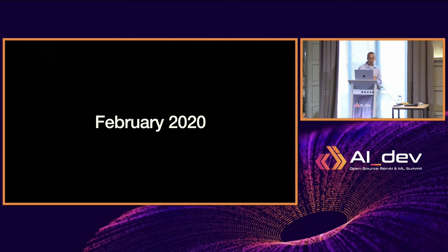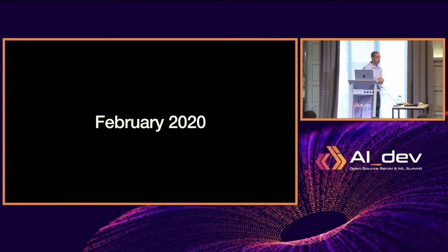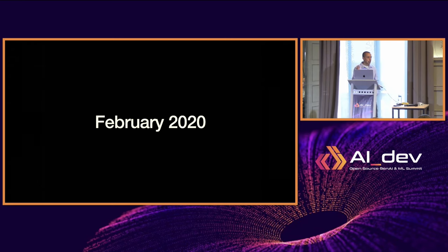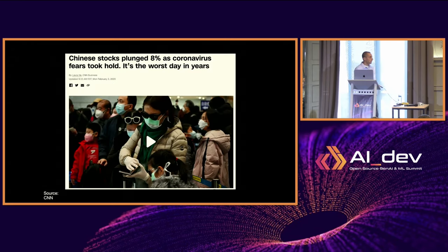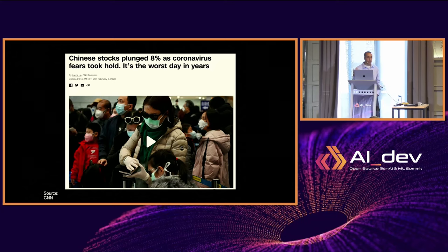I started using GitHub Actions around February 2020 — anyone remember what happened then? COVID. At the time, COVID was mainly in China. For those outside China, it was mysterious news, and most cases were still there.